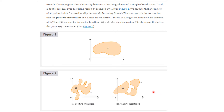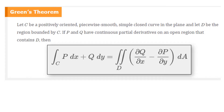This is important not only for Green's Theorem but for other upcoming theorems as well. Let C be a positively oriented, piecewise smooth, simple closed curve in the plane, and let D be the region bounded by C. If P and Q have continuous first partial derivatives in an open region that contains D, then the line integral over C of P dx plus Q dy is equal to the double integral over D of the partial of Q with respect to x minus the partial of P with respect to y, dA.